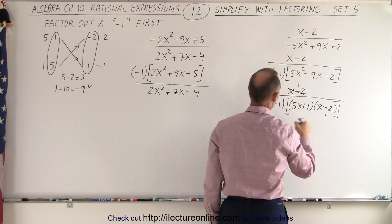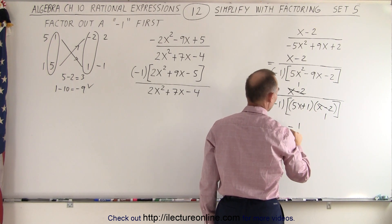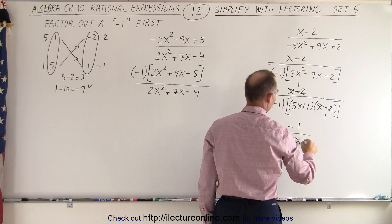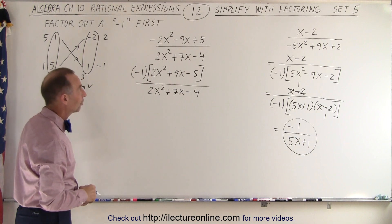We can bring the negative 1 to the numerator and write this as negative 1 divided by 5x plus 1 as the final simplified result of that expression.